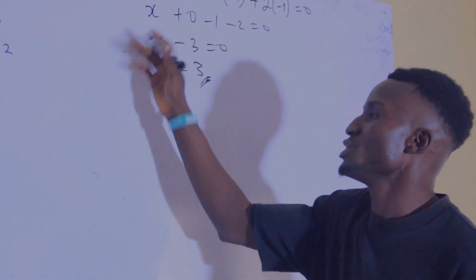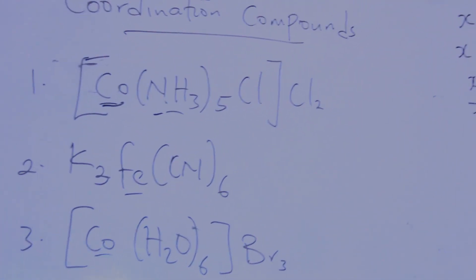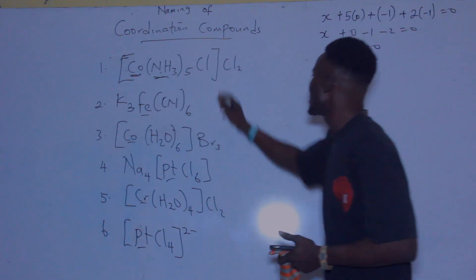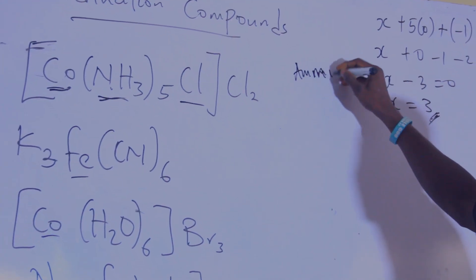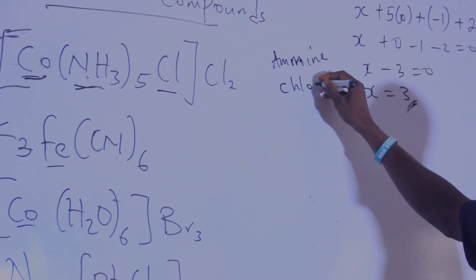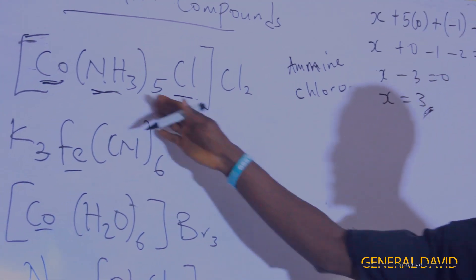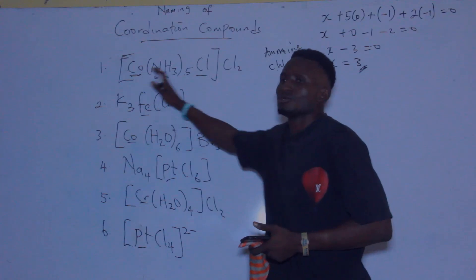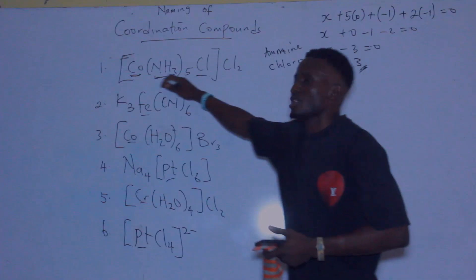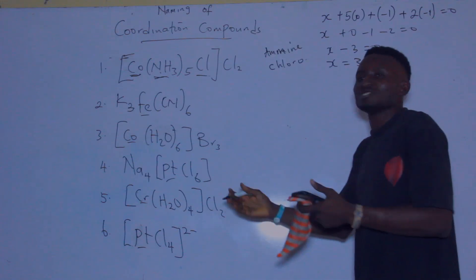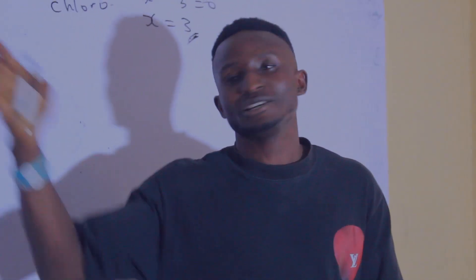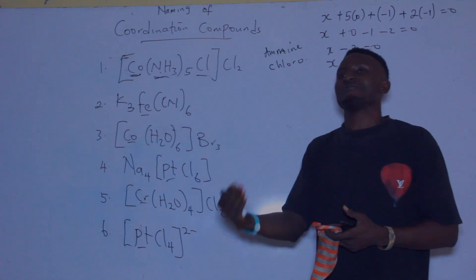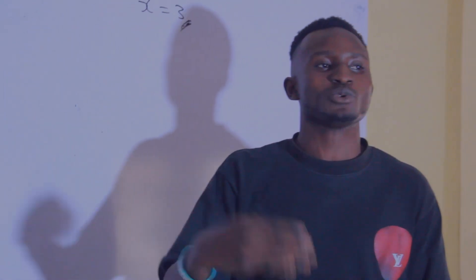Since we've gotten the oxidation state of cobalt as three, note that ammonia is one ligand and chlorine (as chloro) is another ligand. This structure is divided into cations and anions — the complex is the cation and chloride is the anion. When naming, we start with the ligands first. If you have two or more ligands, you must follow alphabetical order — so amine comes before chloro.